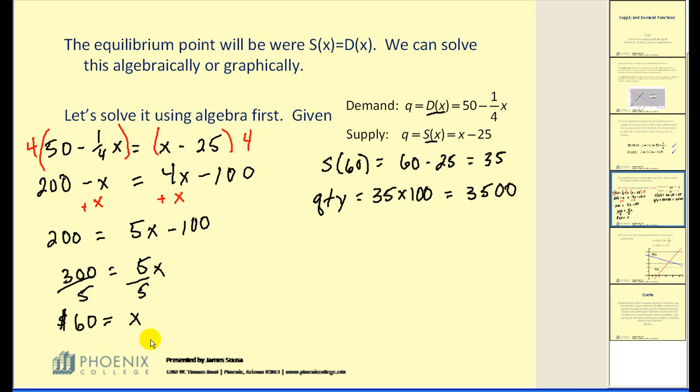So the equilibrium point is when the price is set at $60 and the quantity produced is 3500. Our textbook likes to use this notation, X sub E, Q sub E, as the point of equilibrium. So in this case, we would have $60 as the price and 3500 for the quantity.